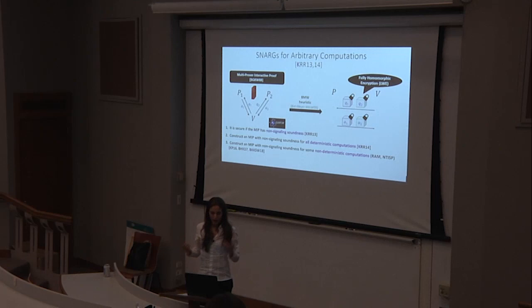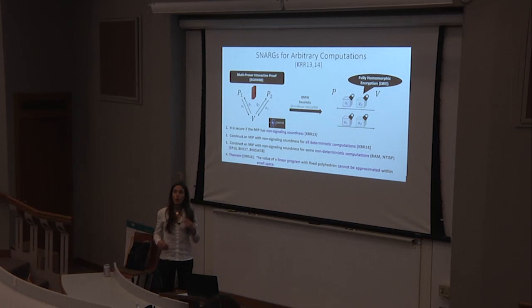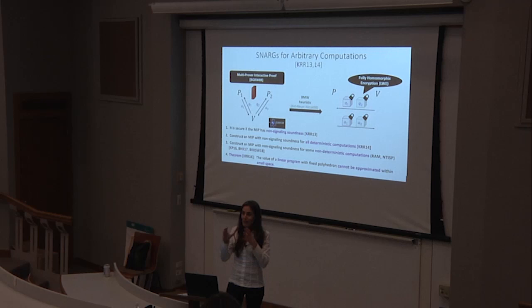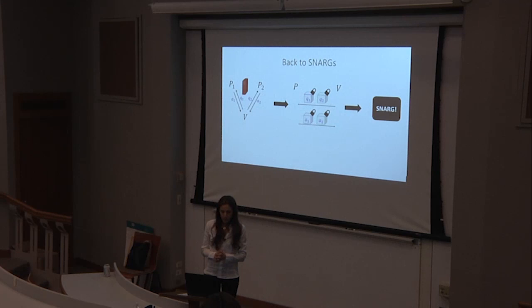Using non-signaling, together with Ran Raz and Oded Regev, we showed that this two-message protocol implies hardness for linear programming — in particular, that the value of a linear program cannot be approximated with small memory, even if the polyhedron is fixed. This is still a two-message protocol though, not a SNARG, since everything is encrypted and you can't verify without the secret key.